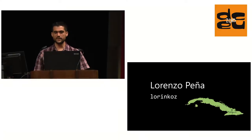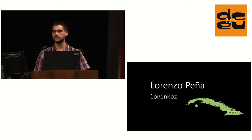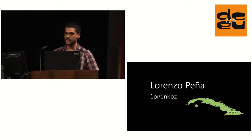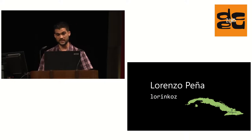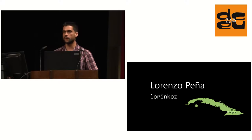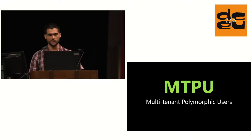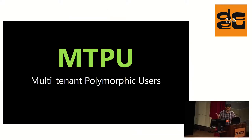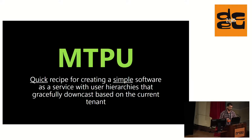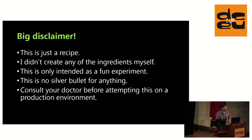Hi everyone, my name is Lorenzo Pena. I come from Holguin, Cuba, and it's a great privilege to be here today. This is my first DjangoCon ever, my first time in Europe, my second time outside of Cuba, my first time publicly speaking in English, and my ninth year in the exciting world of Django. The code name for this lightning talk is MTPU — multi-tenant polymorphic users — which is a fancy name for a recipe for creating a simple software-as-a-service with user hierarchies that gracefully downcast based on the current tenant. Big disclaimer: this is just a recipe, I didn't create any of the ingredients myself — consult your doctor before attempting this in production.